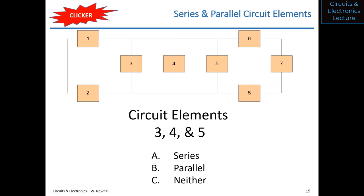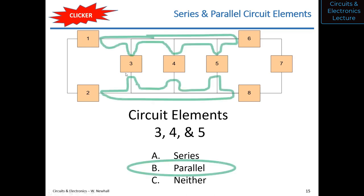One more: circuit elements three, four, and five — series, parallel, or neither? These three circuit elements all connect between the same two nodes — the green nodes. So these are all in parallel. You can have three, four, or five circuit elements in parallel — or in series. In this case, the answer is parallel.